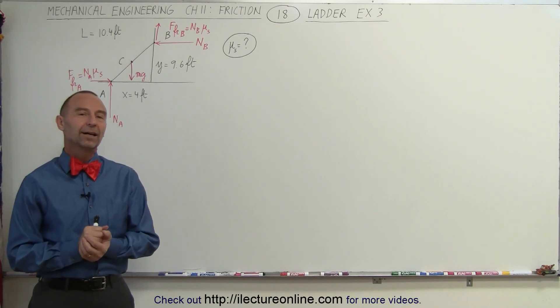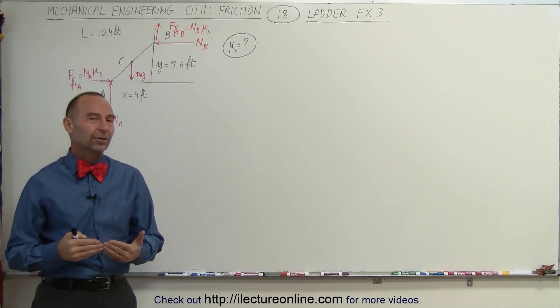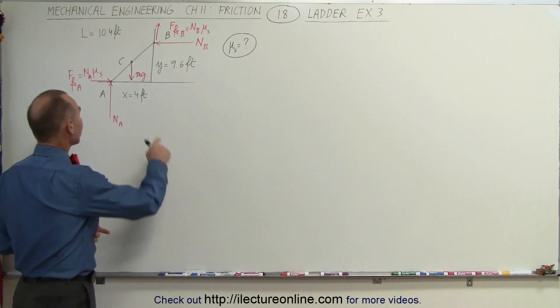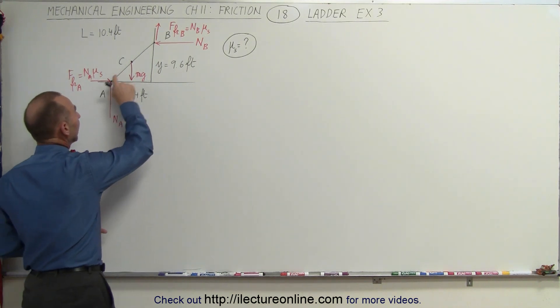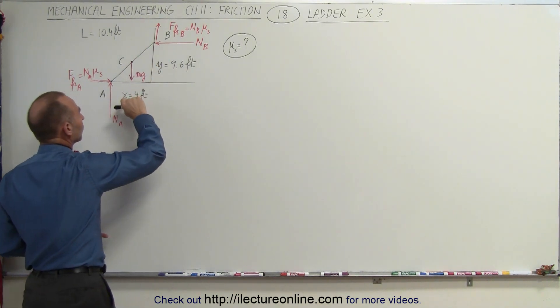Welcome to Electron Line. Our next example with the ladder involves friction both on the floor and against the wall.